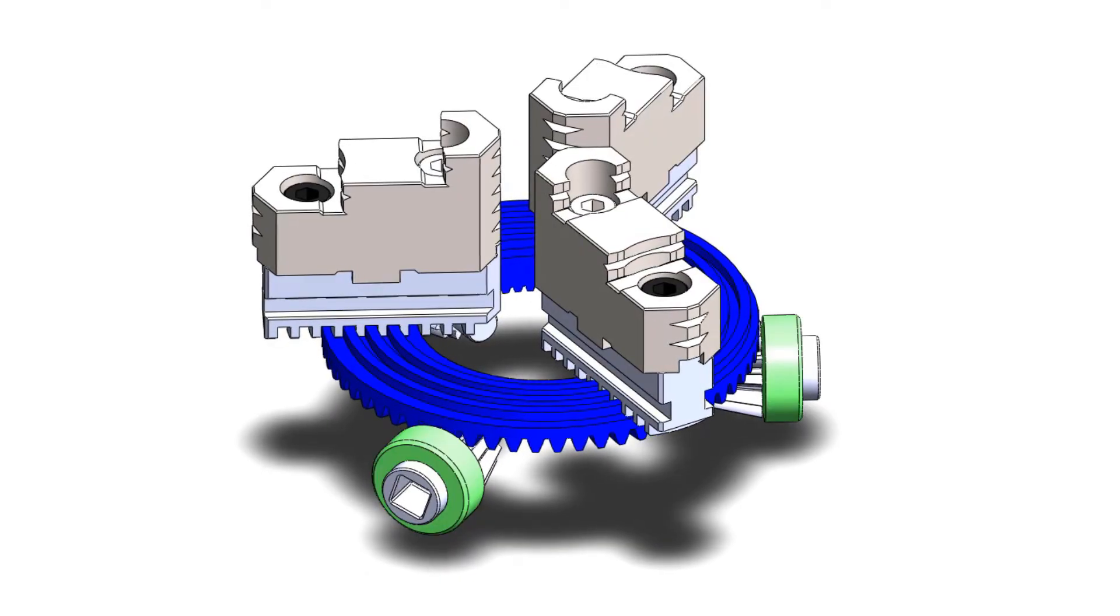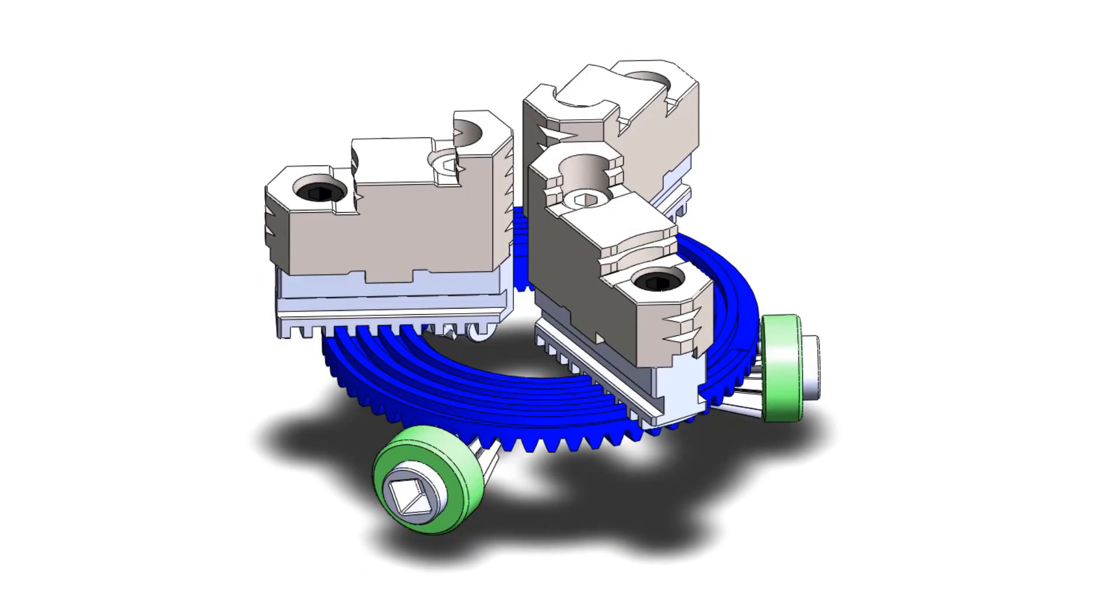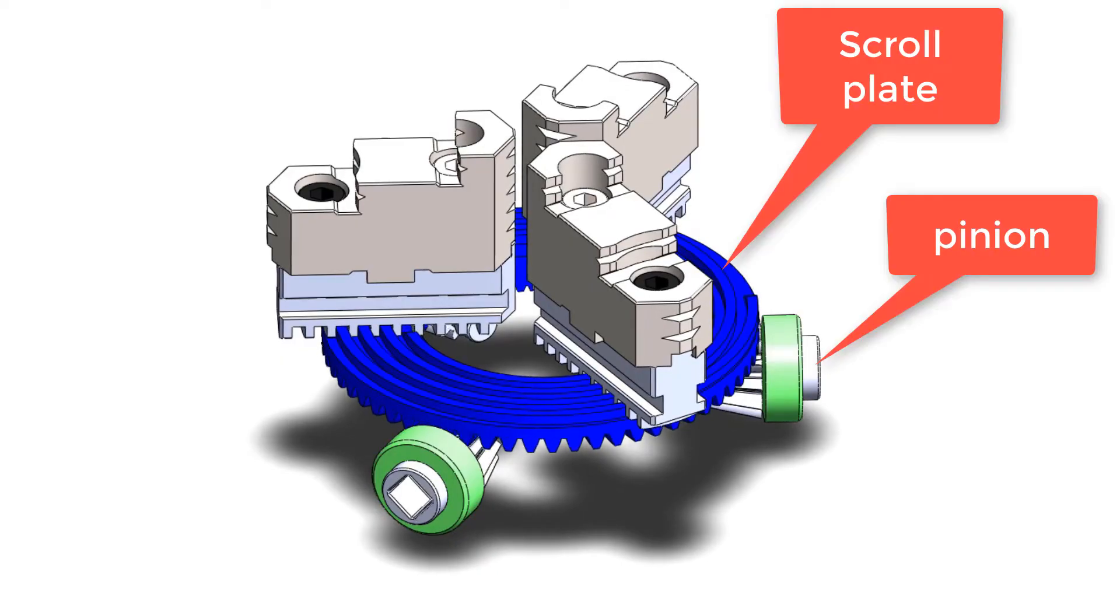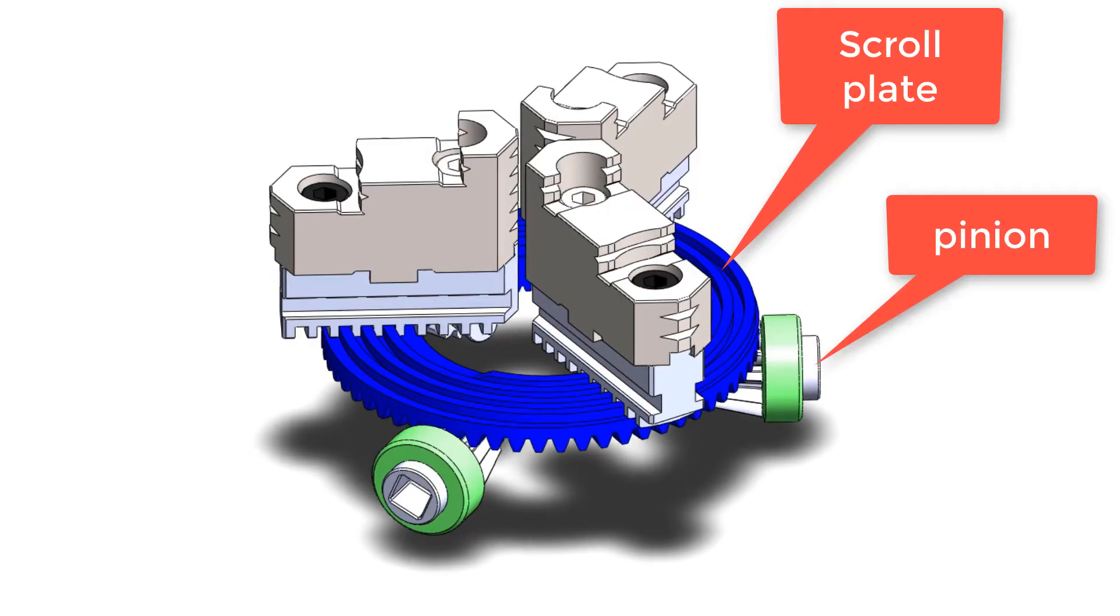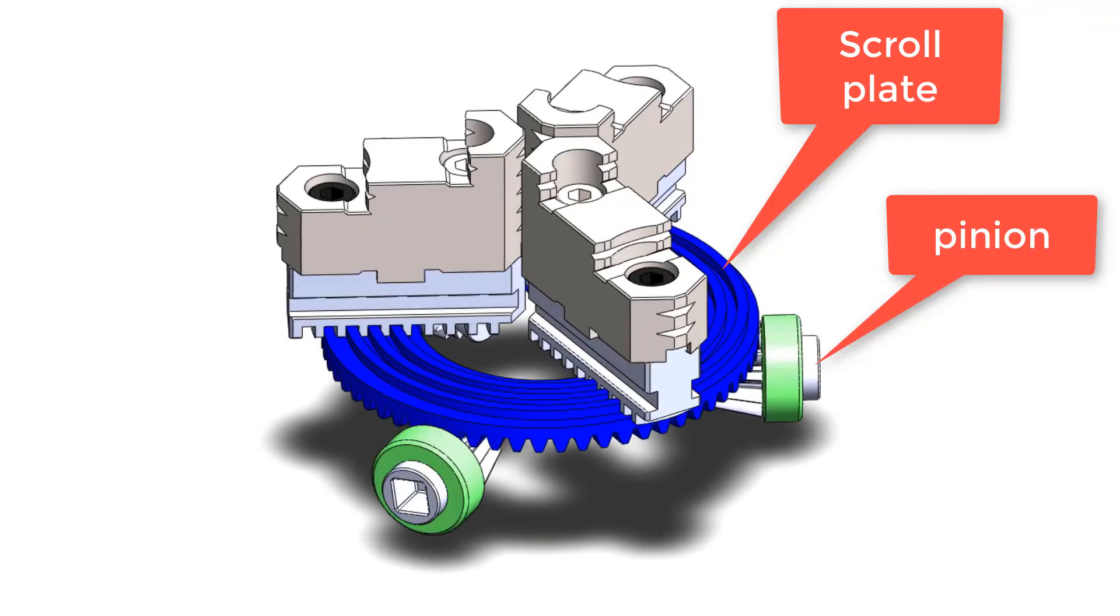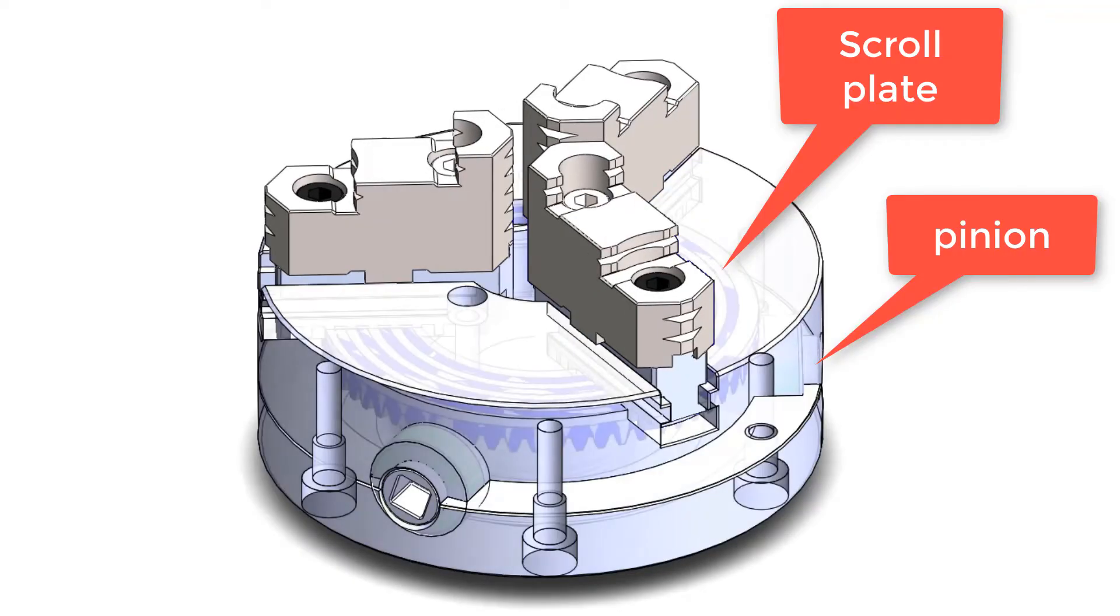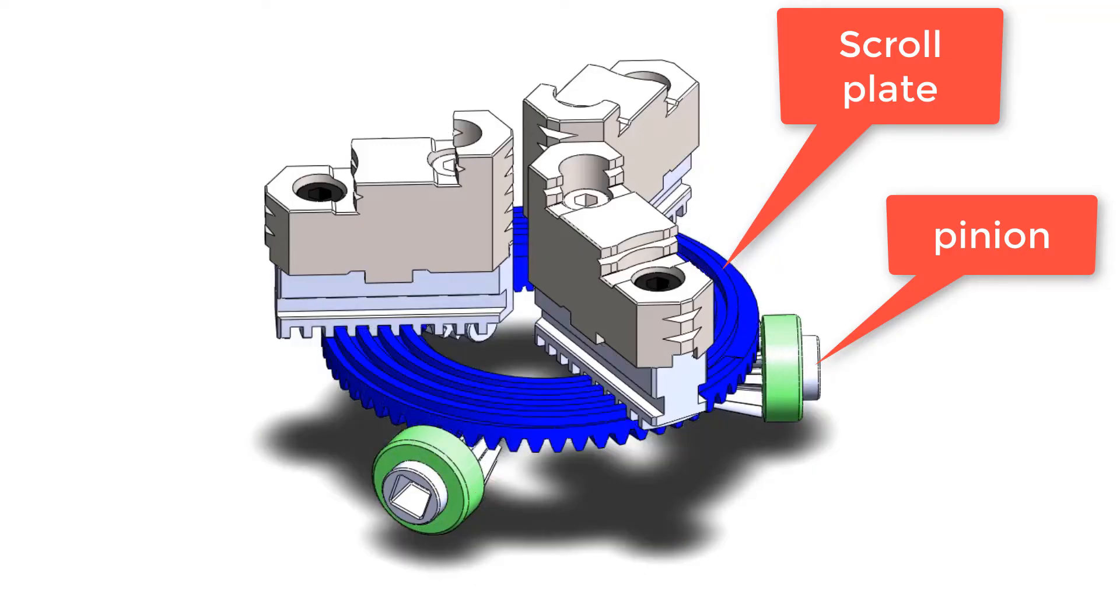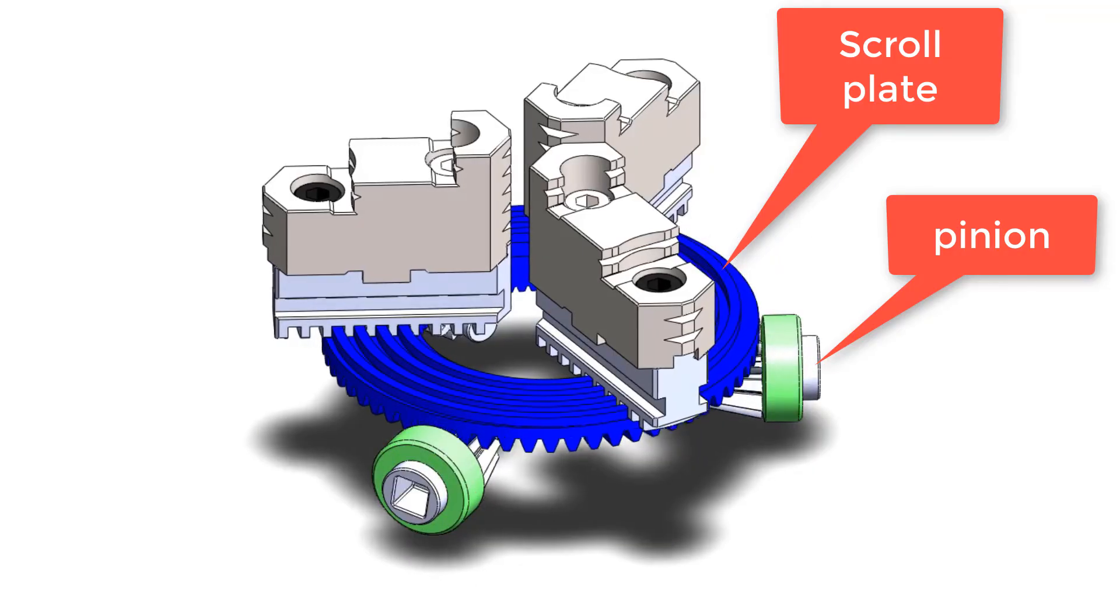Even a single pinion rotation will give movement to all the jaws because of the spiral mechanism, as you can see in the video. In this video, the ratio between the pinion gear and scroll plate is 0.1875, which means when the pinion completes a 360 degree turn, the scroll plate only turns 67.5 degrees.